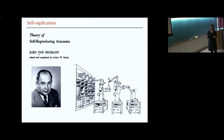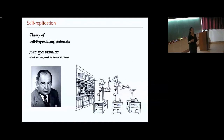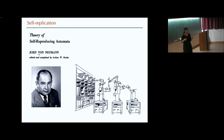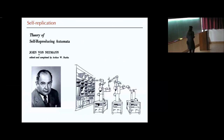Von Neumann was very much interested in the logic behind the process of self-replication. He didn't care about physical model systems or biology — he really just wanted to understand the logic. What are the necessary ingredients to actually replicate something? In his mind he was trying to build a universal machine capable of building any other machine — a universal robot that can build any other robot and, as a special case, build itself. We are going to be driven by something like that.